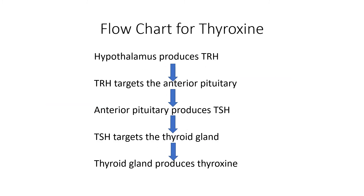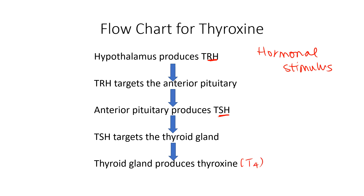Let's talk about thyroxine production. This is a great example of a hormonal stimulus and a negative feedback loop that originates with production of thyrotropic releasing hormone, or TRH, that comes from the hypothalamus. TRH targets the anterior pituitary, which in turn releases thyroid stimulating hormone, or TSH. TSH targets the thyroid gland, and in response the thyroid gland produces thyroxine — which is T4, the more common but less potent form. This feedback loop is how we manage thyroxine levels in the body.